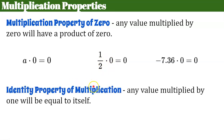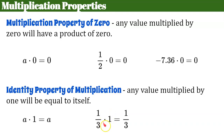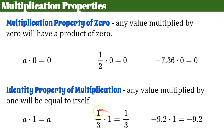The identity property of multiplication states that any value multiplied by one will be equal to itself. So any number a multiplied by one equals that number a. For example, one-third multiplied by one is still one-third, and negative 9.2 multiplied by one is equal to itself, negative 9.2. So be on the lookout: a factor of zero gives a product of zero, and a factor of one gives you the other factor.